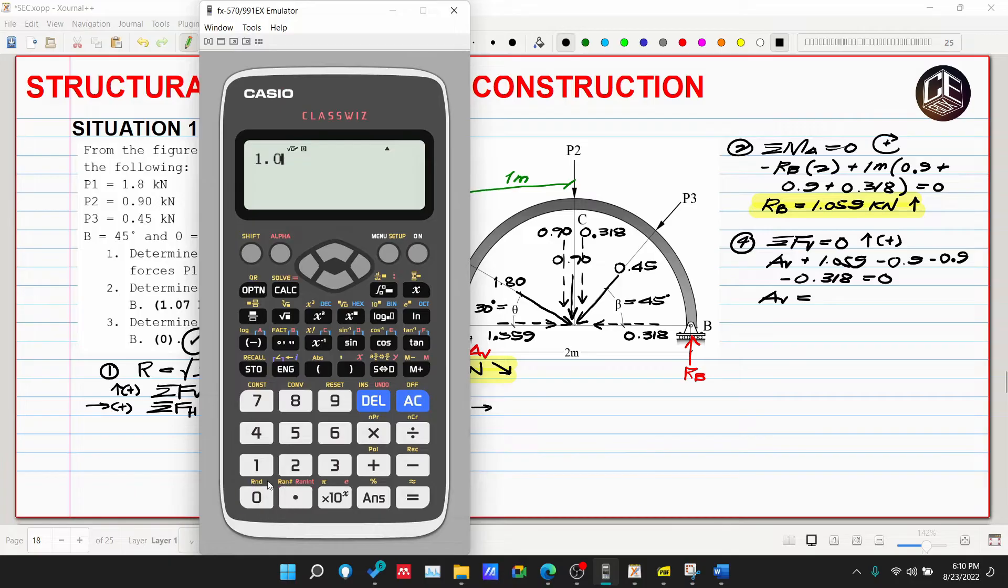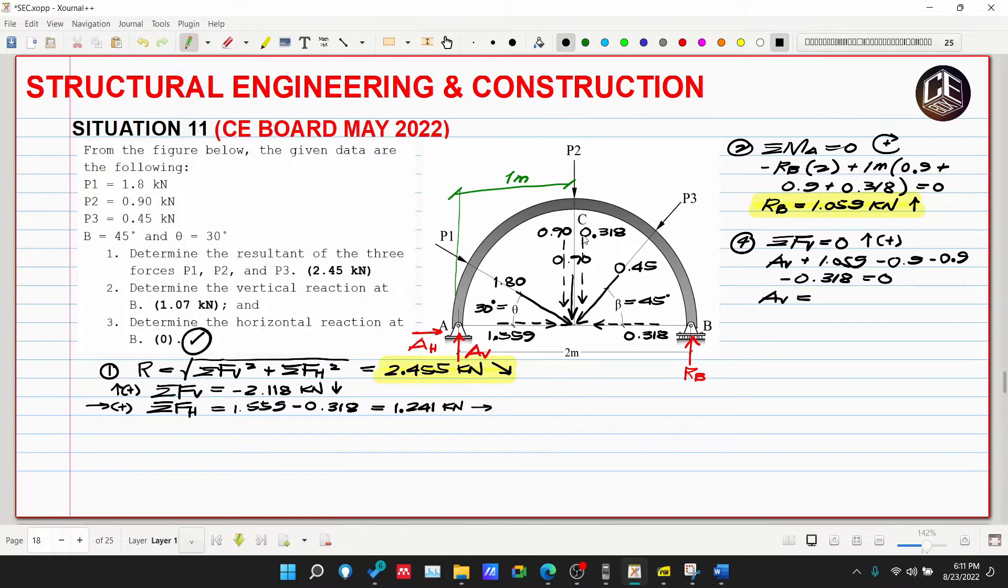So 1.059 minus 0.9 multiplied by 2 minus 0.318. Bakit? Kasi kung napapansin ninyo, 0.9 nandito sa gitna, then ito 0.318. Ibig sabihin, since itong vertical forces na to ay nasa gitna, ibig sabihin yung ating AV and RB ay maghati lang din, kaya parehas sila ng value ng reaction.